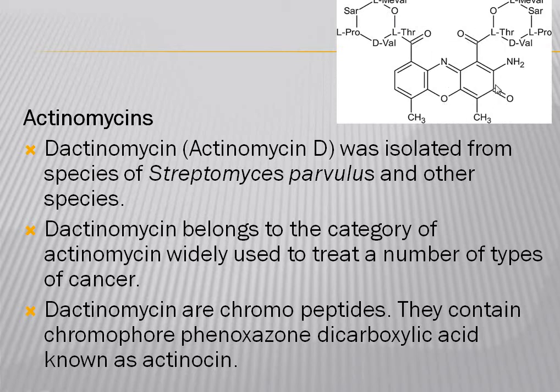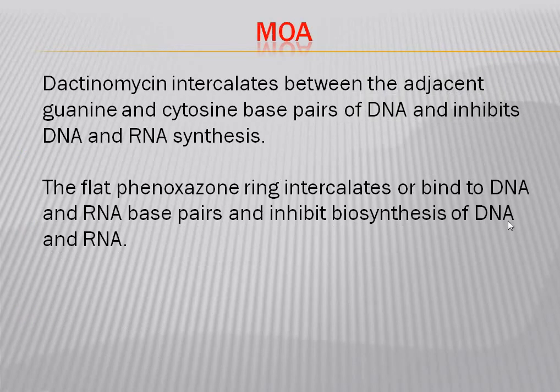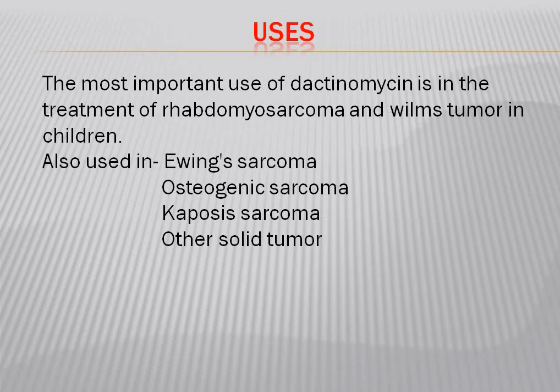The mechanism of action of dactinomycin involves intercalation between adjacent guanine and cytosine base pairs of DNA, thereby inhibiting DNA and RNA synthesis. The flat phenoxazone ring intercalates or binds to the DNA and RNA base pairs and inhibits biosynthesis of DNA and RNA. The most important use of dactinomycin is in the treatment of rhabdomyosarcoma and Wilms' tumor in children. It is also used in Ewing's sarcoma, osteogenic sarcoma, Kaposi's sarcoma, and other solid tumors.